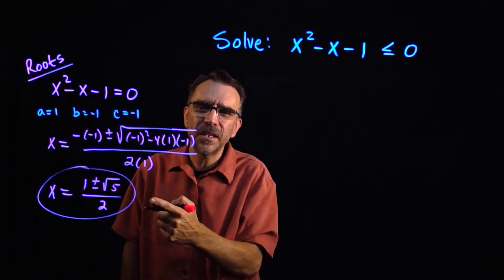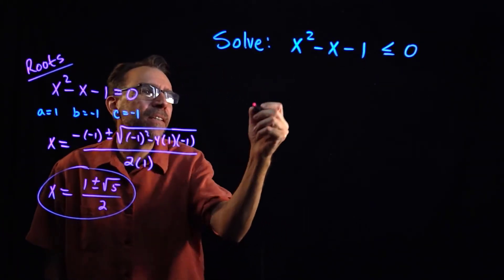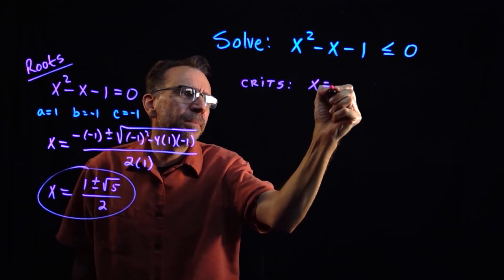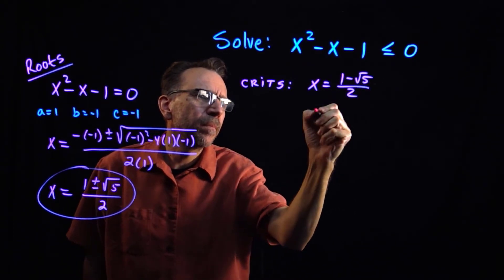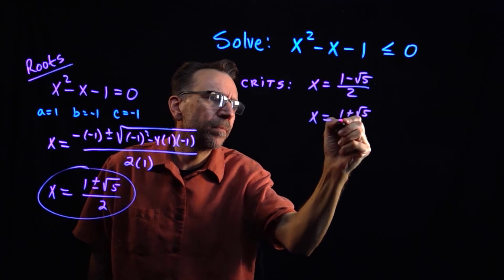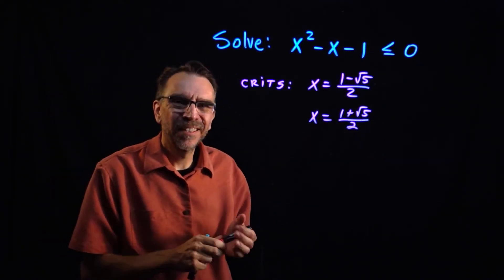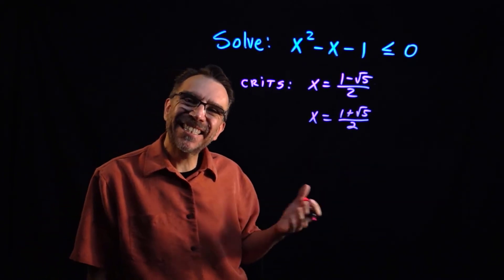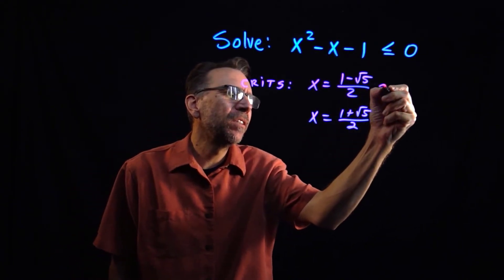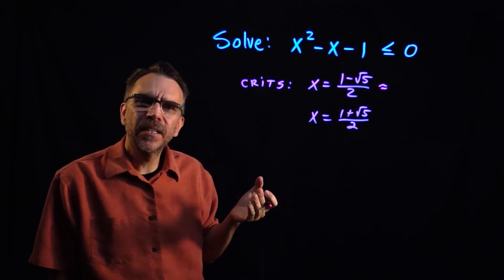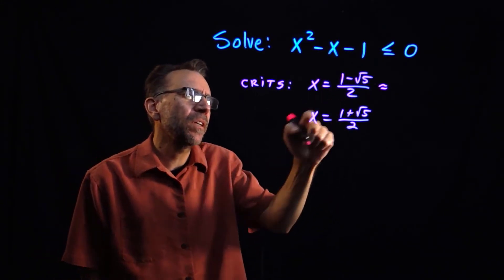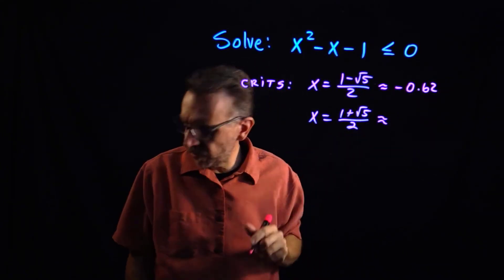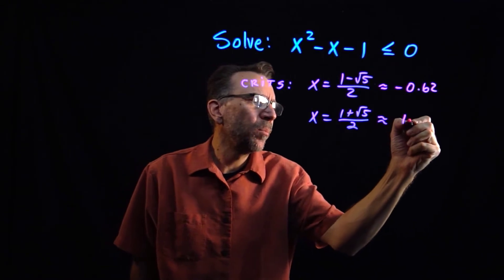Simplifying, we get 1 plus or minus square root of 5, all over 2. That gives us our two critical numbers. On a calculator, the value with the minus gives approximately negative 0.62, and the value with the plus gives approximately 1.62. That will help us place the points on the number line for the sign chart.